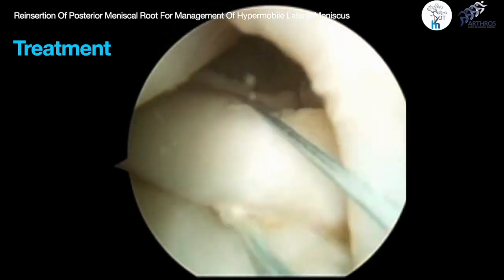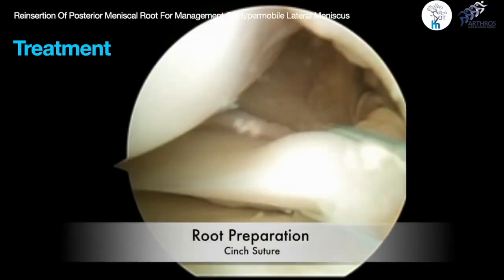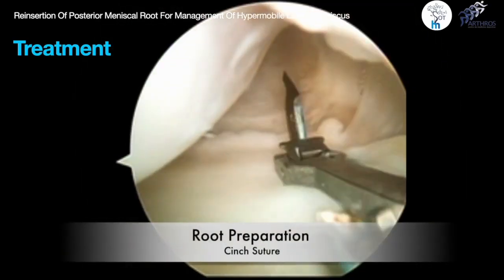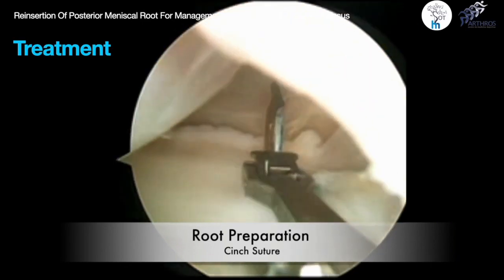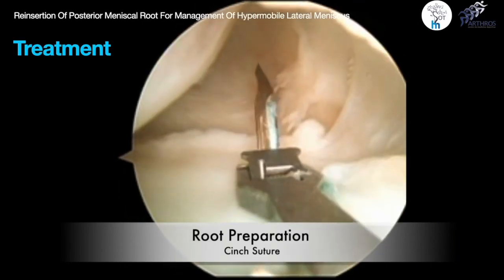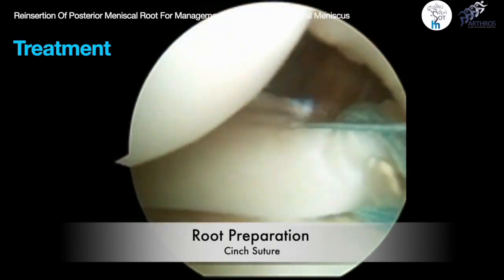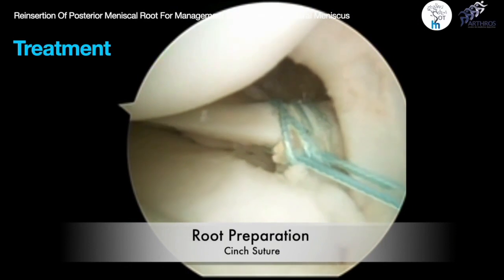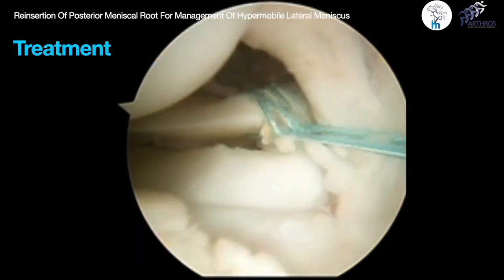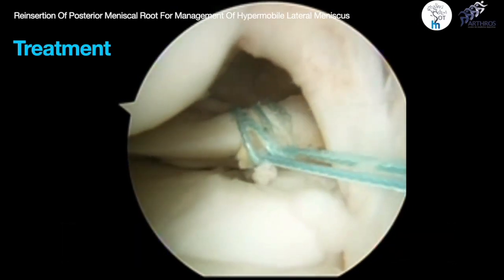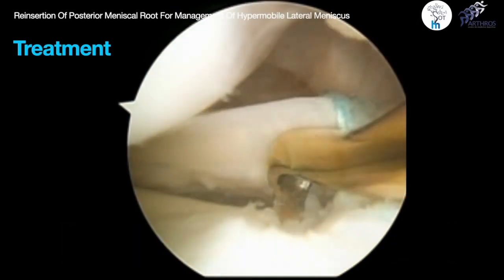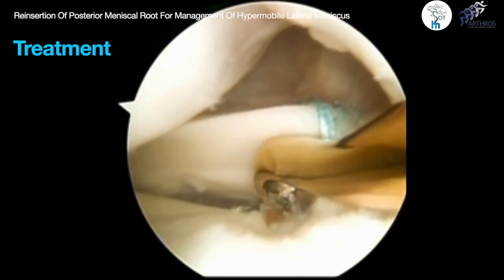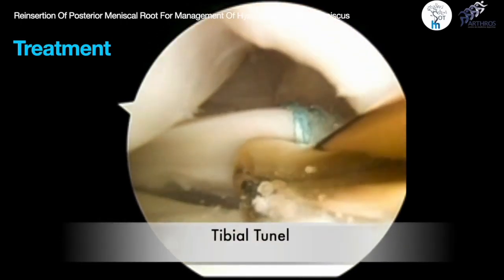The meniscal root is sutured with two high-resistance sutures and a scorpion-type suture passer. We used cinch-type knots to achieve secure suturing. For the tibial tunnel, we place the meniscal root guide at a 50-degree angle.